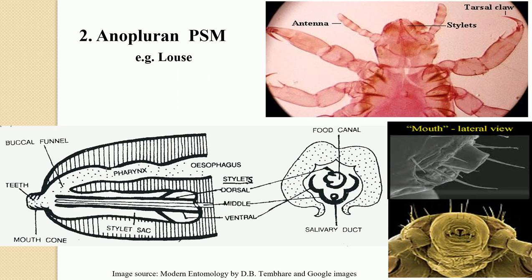The second subtype is the anopluran PSM. In the case of lice, which belong to the order Anoplura, the maxillae, hypopharynx, and labium are modified into three superimposed stylets — they are interlocked. The maxillae form the dorsal stylet, the hypopharynx forms the middle stylet, and the labium forms the ventral stylet. So there are three stylets in total.